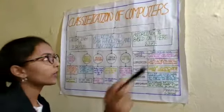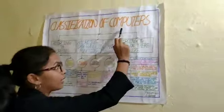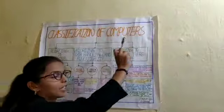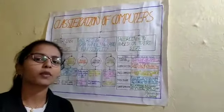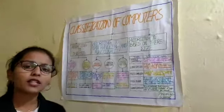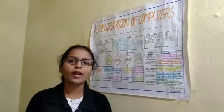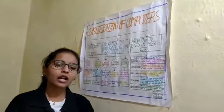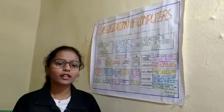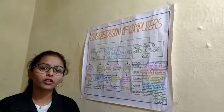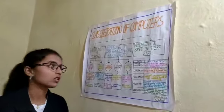The full form of computer is Commonly Operated Machine Particularly Used for Education and Research. A computer is an electrical device which stores and processes data and gives output — this is known as a computer.